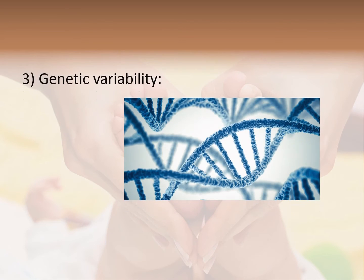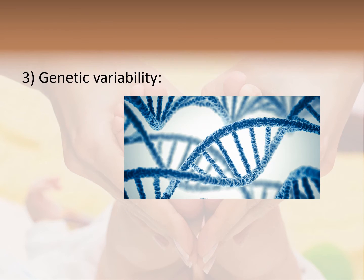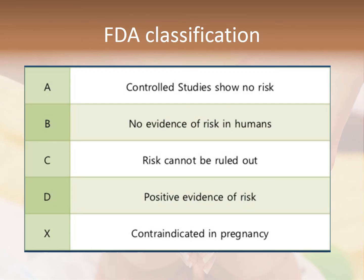Third, genetic variability — certain genes could make the baby more susceptible to the effect of a teratogen. To know if a certain drug is harmful during pregnancy, you should know which category it belongs to according to FDA classification.